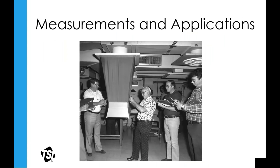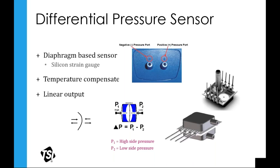We're going to go right into measurements and applications, starting with the basics. The differential pressure sensor is a built-in pressure sensor, and we'll go through about six different measurement applications that utilize the differential pressure ports. We use the differential pressure sensor for doing high-side and low-side pressures. It's a very linear output with temperature compensation and does require zeroing prior to taking measurements.